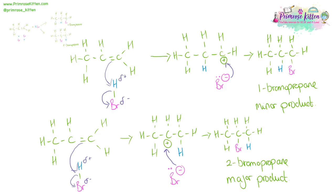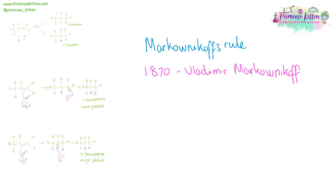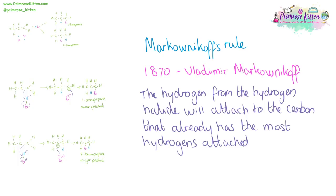When you have a hydrogen halide undergoing electrophilic addition to an unsymmetrical alkene, you are always going to get two, possibly more, different products. The minor product is always going to have a much, much lower yield than the major product. This relationship was stated in 1870 by Vladimir Markovnikov, and this is now known as Markovnikov's rule. The hydrogen from a hydrogen halide will attach to the carbon that already has the most hydrogens attached to it.